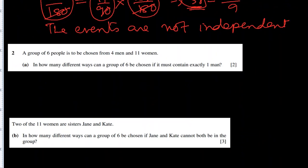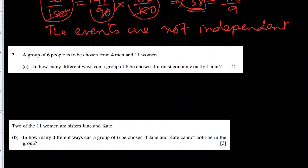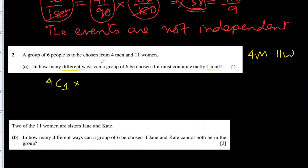Question 2: a group of six people is to be chosen from four men and eleven women. In how many different ways can a group of six be chosen if it must contain exactly one man? Out of four men we choose exactly one, and the remaining five are chosen from women only.